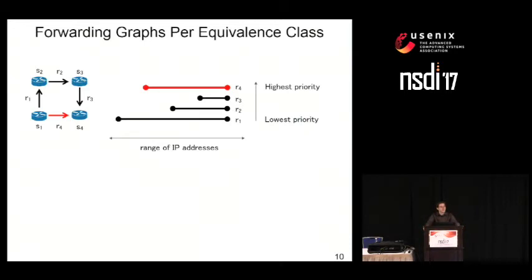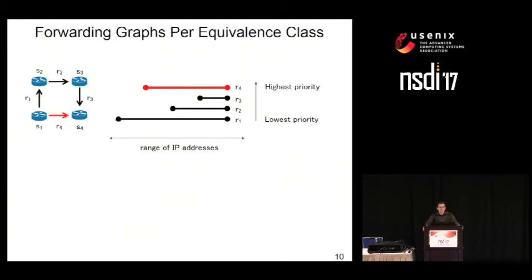Let's consider a simple network that consists of four switches with four rules depicted as arrows. Since we're considering IP prefix-based forwarding tables, each route has an IP prefix associated with it, depicted by horizontal bars each corresponding to a range of IP addresses. Bars overlap in common sub-ranges of IP addresses. We stack these routes on top of each other based on their priority — closer to the bottom are lower priority routes, while the red rule at the top has the highest priority.